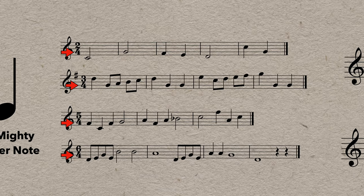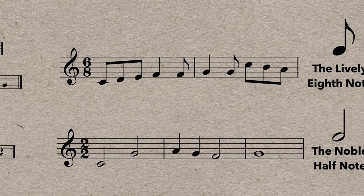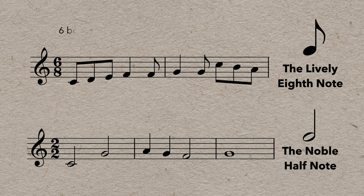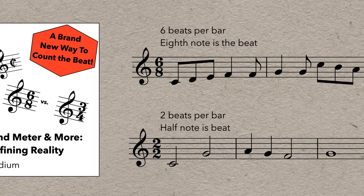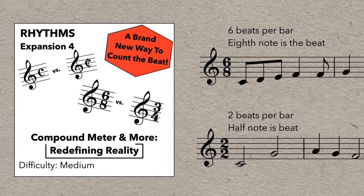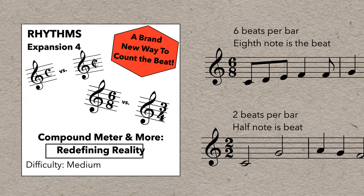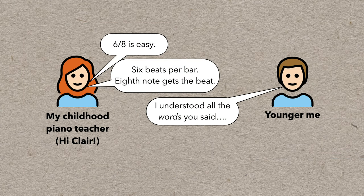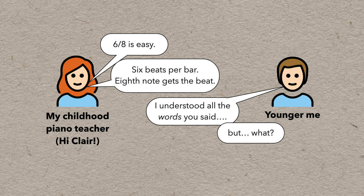But you can have time signatures based on the eighth note, like 6-8, or on the half note, like 2-2. And although the rules for interpreting these markings are pretty simple, for a lot of people, this really does feel like redefining reality, and it takes a bit of mental readjustment. I remember the first time I learned a piece with a different time signature, and my brain just didn't understand what my teacher was trying to tell me at all. And I didn't understand why you would do this anyway.